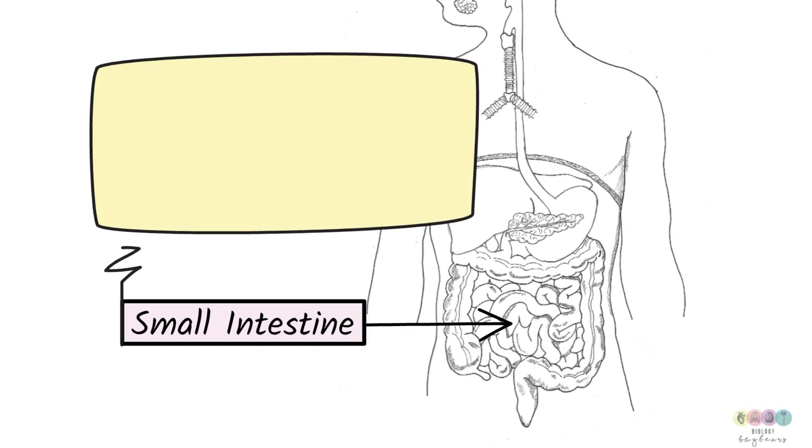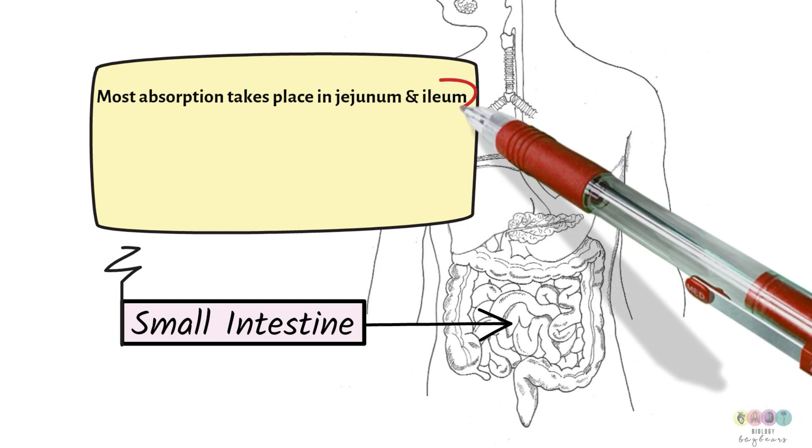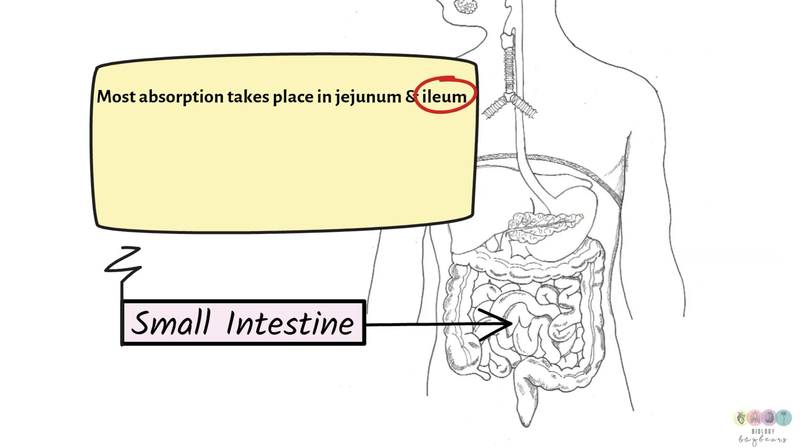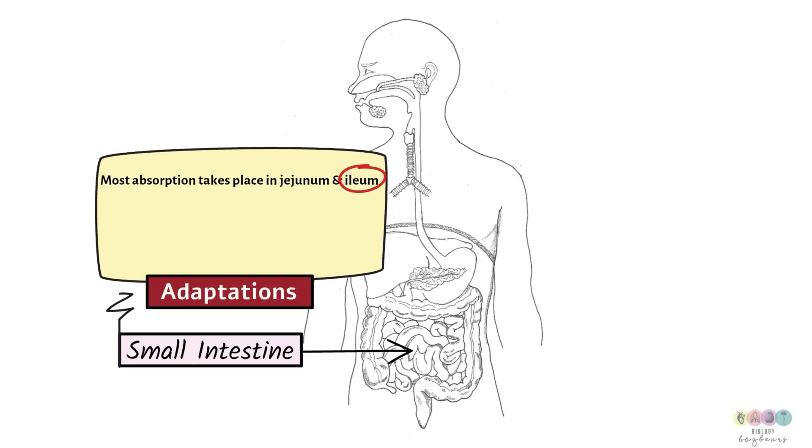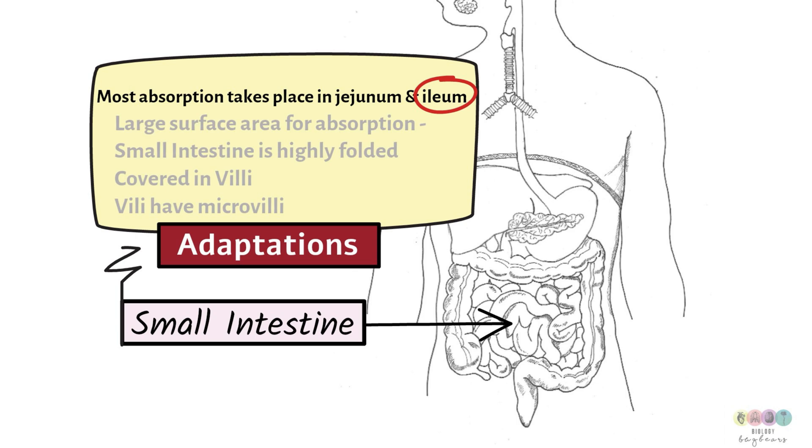Digestion is complete. And those products of digestion need to be absorbed. They need to pass from the small intestine into the blood. Most absorption takes place in the jejunum and ileum. But for your leaving cert, you're mostly concerned with the ileum. The small intestine is really well adapted for absorption. It has a large surface area. And this is achieved because the small intestine is highly folded. And it's covered in villi, these little projections. And the villi have microvilli.